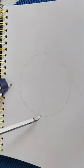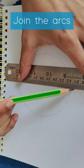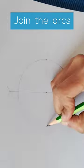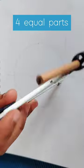Now we have to draw perpendicular bisectors. Join the arcs with the help of your ruler passing through the center of the circle. As you can see, we have divided the circle into four equal parts or four quadrants.